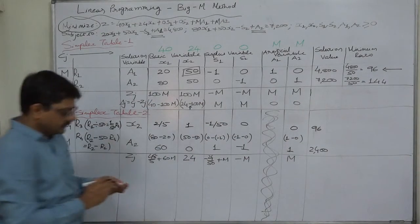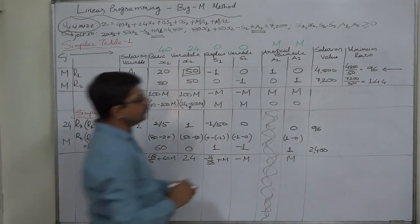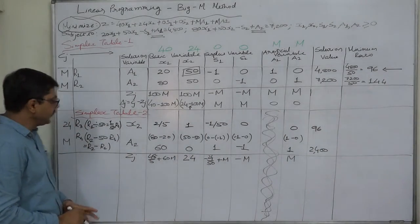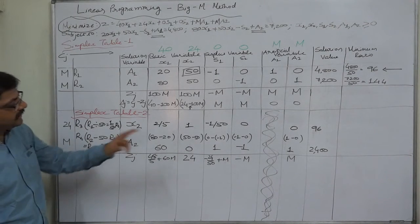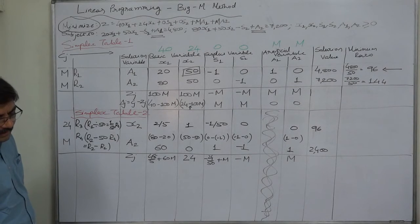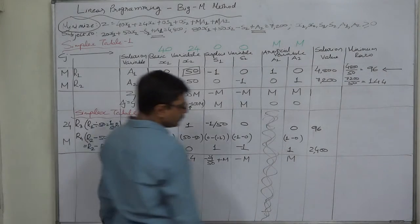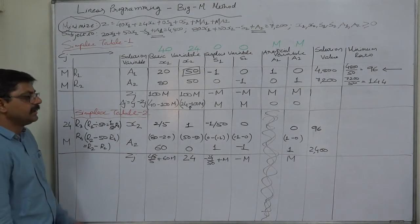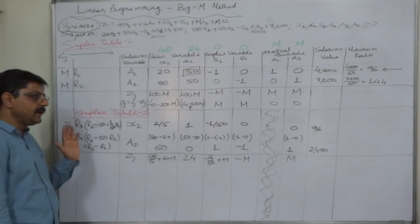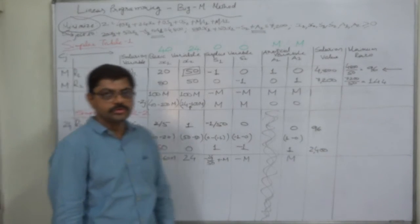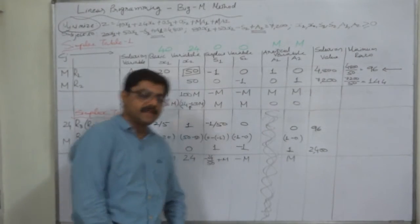I don't suggest to write the solution value in the zj row, but if you want to write, you can multiply 24 and 96 and add. It will be 2400M, so it will be 2304 plus 2400M. But I suggest that you write zj value only when we reach the optimal solution, particularly in case of Big M method.